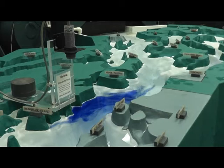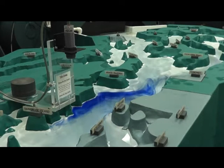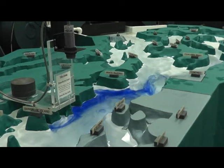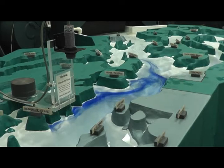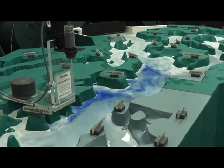This is what we call the net estuarine circulation. Over many tidal cycles, surface fresher water flows out to the ocean, and deep, saltier water enters from the ocean.